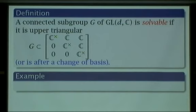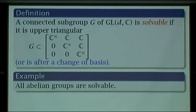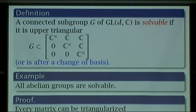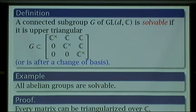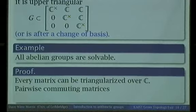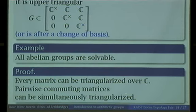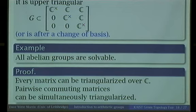In graduate school you've probably learned that abelian groups are solvable. Let's check that my definition has the same property. Even as an undergraduate you learn that every matrix can be made upper triangular over C — a single matrix can always be made upper triangular if all eigenvalues are in the field. More is true: if you have a bunch of pairwise commuting matrices, you can make them all triangular with the same basis. If you've got an abelian group, all matrices commute with each other, so you can make them all upper triangular at the same time.